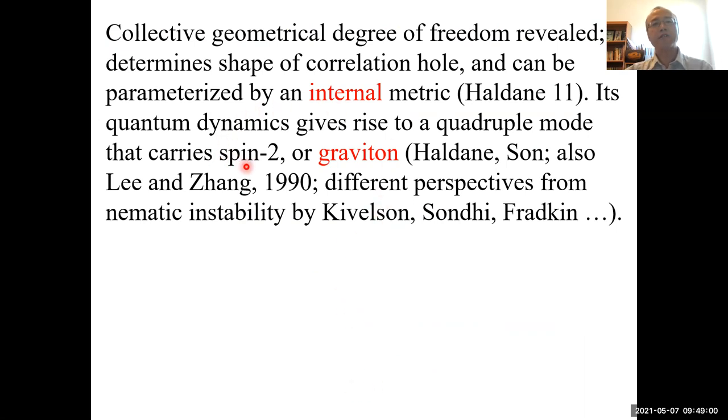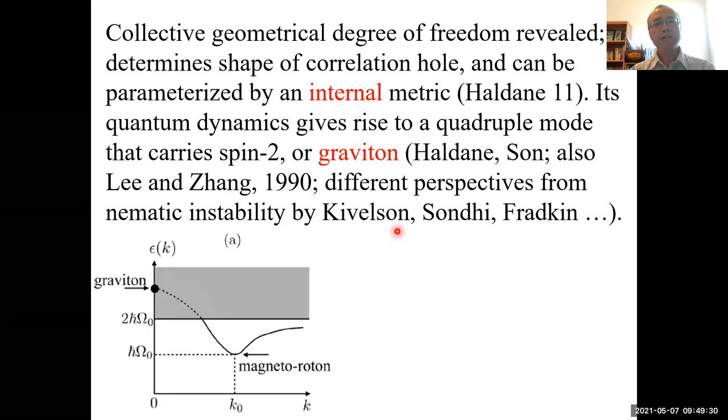So the question now is what is its dynamics? So, as pointed out earlier, and also discussed earlier by other speakers, they are expected to give rise to a spin-2 graviton excitation. Precursors of this observation actually go back all the way to 1990 by Dung-Hai Lee and Xiao-Gang Wen, and different perspectives of this understanding actually come from considerations of nematic instability of quantum Hall states by Eduardo, Steve, and Shivaji and their collaborators. So the prediction is the following. We now understand very well that there is this magneto-roton mode at finite wave vector, which of course when you go to the long wavelength limit, it enters the particle continuum, but the prediction is that we still should have a mode, which is called a graviton at zero wave vector.